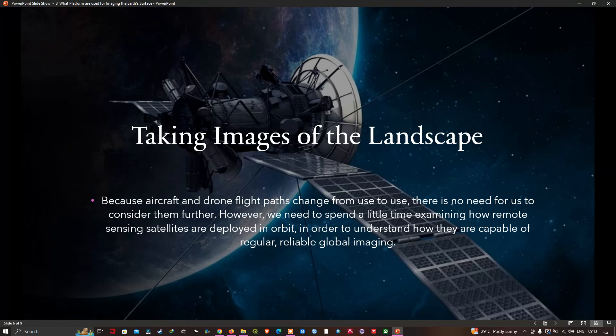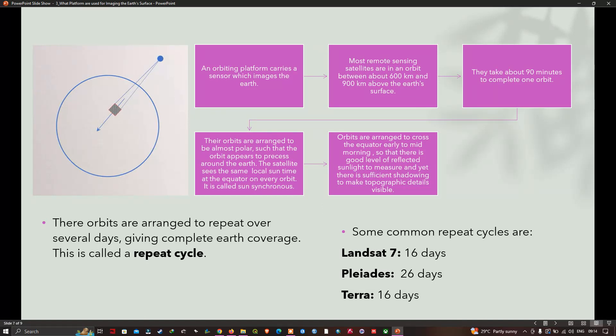Without going into the details of orbital mechanics, it is sufficient to notice that most remote sensing satellites orbit quite close to the earth's surface, typically between 600 to 900 kilometers, referred to as a low earth or LEO orbit. In such an orbit, the satellite takes about 90 minutes to do one complete revolution about the earth. Here is the neat trick which is fundamental to almost all operational remote sensing missions: the orbits are arranged to be near polar such that the orbit appears to have the earth rotating eastwards underneath the satellite.